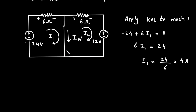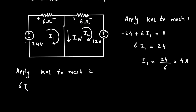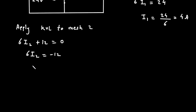Similarly, we will find I2. Let's apply KVL to mesh number 2. Starting from this point, it will be plus 6I2, then plus 12 is equal to 0. If we take plus 12 on the right side, it will be 6I2 is equal to minus 12. Therefore, I2 is equal to minus 12 divided by 6, which is minus 2 ampere.